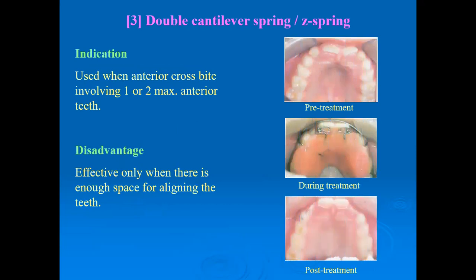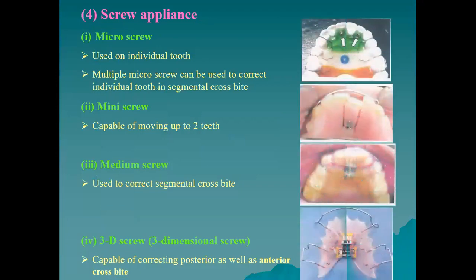The double cantilever or Z-spring appliance is indicated for maxillary anterior cross bite involving one or two maxillary teeth in cross bite, used with a posterior bite plane. Its disadvantage is that it is effective only when there is enough space for tooth alignment. A screw appliance using micro, mini, or medium screw, or a 3D screw, can also be used. Once the screw is activated the tooth moves toward the activated side. For all these appliances, raising the bite is mandatory to allow tooth movement.